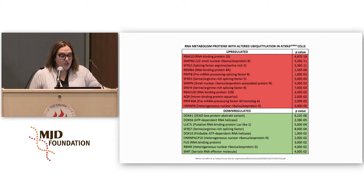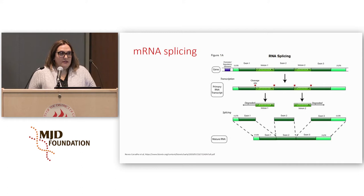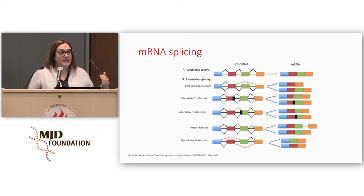Some of these proteins related to different functions, as you can see in the graph below. In green, we highlighted those related to functions we had not thought of before for Ataxin-3 — which had to do with RNA metabolism, processing, and splicing. That was something that had not been explored in terms of the function of this protein. Several proteins were either up-regulated or less present in the ubiquitinated fraction, and many were related to mRNA splicing, which is involved in maturing mRNA and generating diversity between cells — a particularly relevant process in neurons.